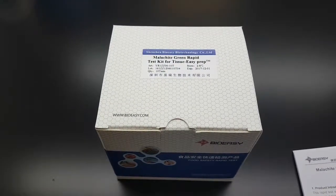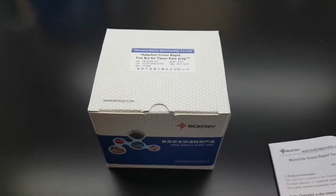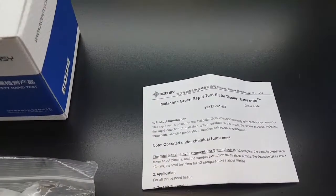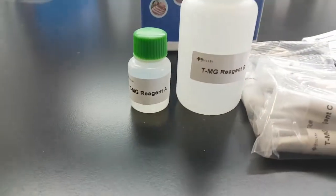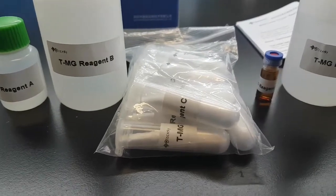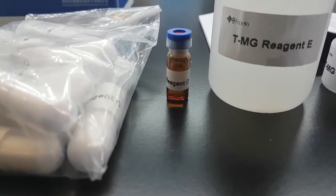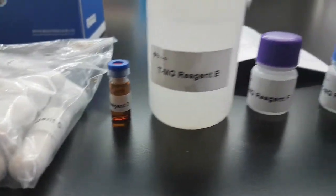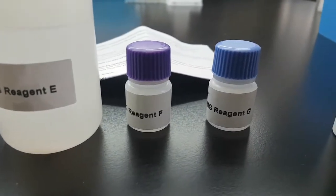Malachite green rapid test kit for tissue. Let's first talk about what we have in this box. We have the manual, one bottle of reagent A, one bottle of reagent B, ten capsules of reagent C powder, one bottle of reagent D, one bottle of reagent E, one bottle of reagent F and G.